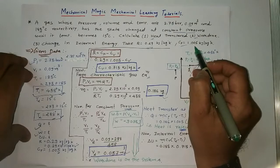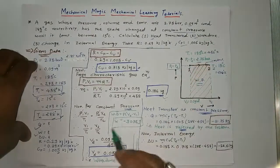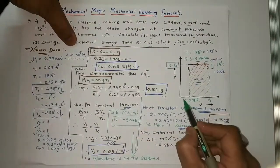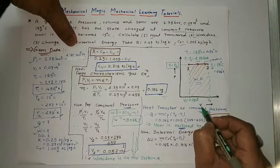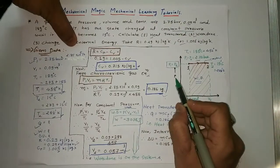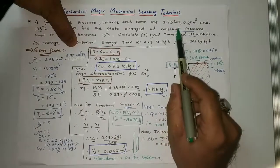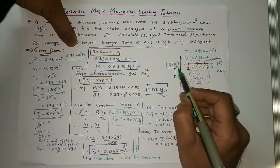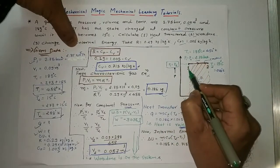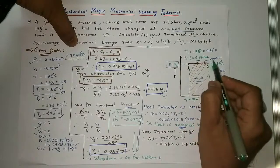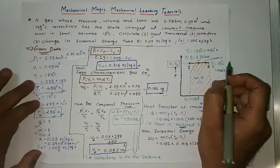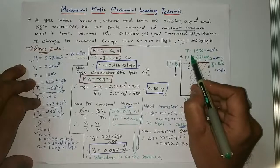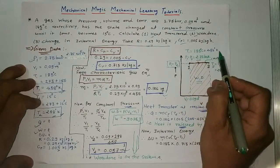Now drawing a PV diagram for the system. The x-axis represents volume and the y-axis represents pressure. Since this is a constant pressure process, P1 equals P2 throughout. Point 1 and point 2 are both at constant pressure P1 equal to P2 equal to 2.75 bar. The temperature at point 1 is 458 Kelvin.